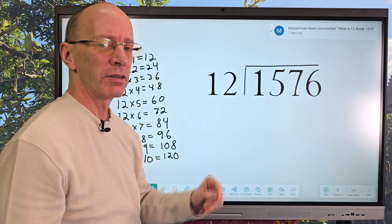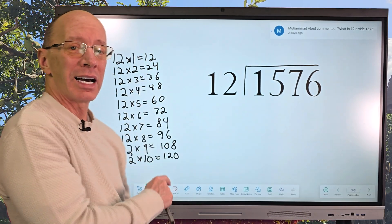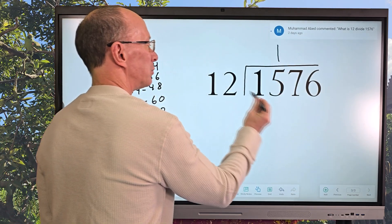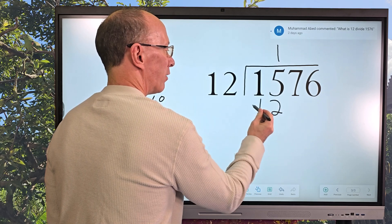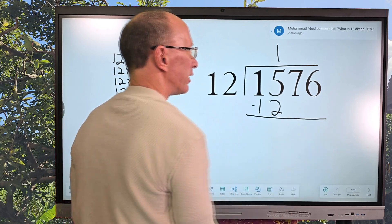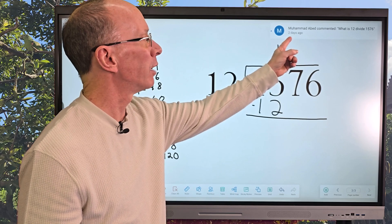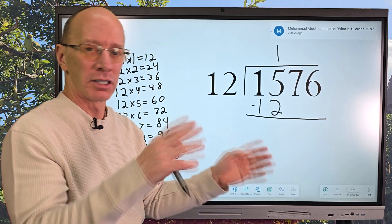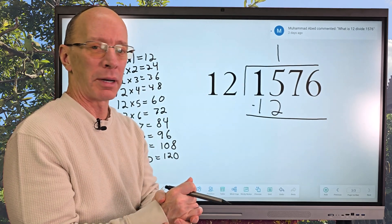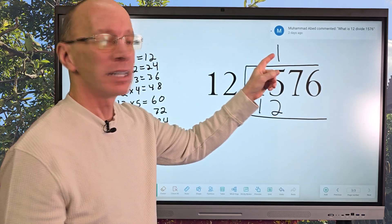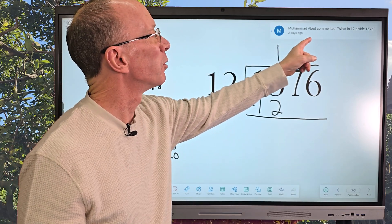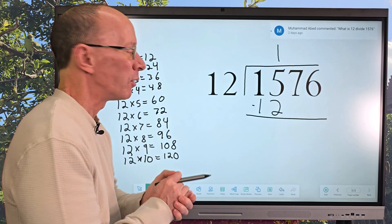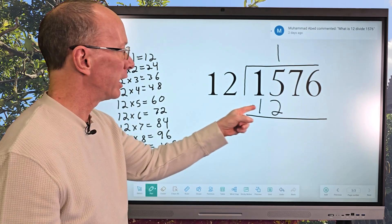So how many times can I put 12 into 15? One time. So I put the 1 right here. And then 1 times 12 is 12. And now I'm going to subtract. And this problem is from Muhammad there. He asked, or I'm not sure if it's he or she, sometimes kids will take their parents' email address. But they wanted 1,576 divided by 12. And thank you so much for requesting that problem.